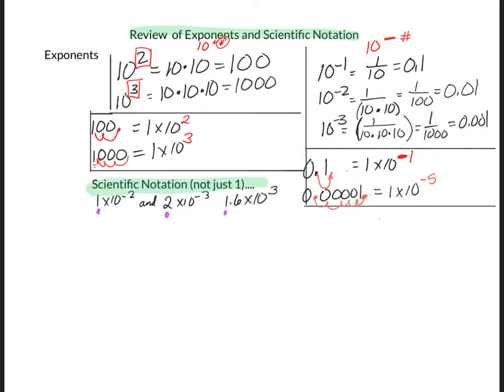For these examples, we had 1 times 10 to the 2 — that one's fine. We have 2 times 10 to the negative 3 — that one is fine. But what about 1.6 times 10 to the 3rd? That one's fine too, because they each have just one number in front of the decimal.